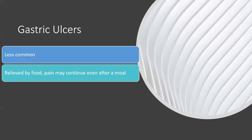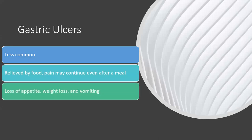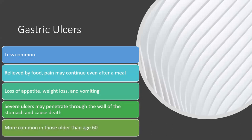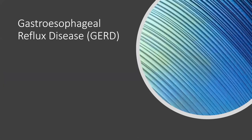Gastric ulcers are less common than duodenal ulcers. They are not relieved by food, and pain may continue even after a meal. Symptoms include loss of appetite, weight loss, and vomiting. Severe ulcers may penetrate through the wall of the stomach and can cause death. Gastric ulcers are more common in those older than 60 years.